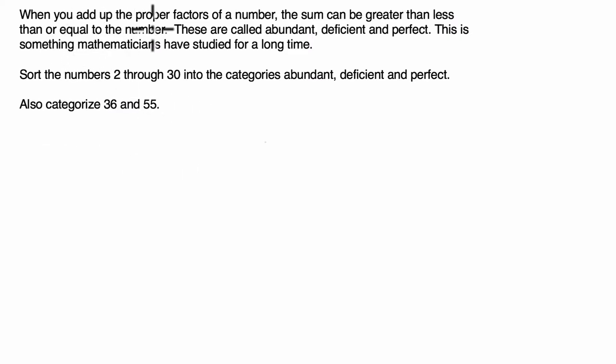All right, so when you add up the proper factors of a number, the sum can be greater than, less than, or equal to the number. And let's just look at that really quick. So let's say we have the number 15. What are the proper factors of 15? Well, the factors of 15 are 1 times 15 and 3 times 5. So the proper factors are all the factors of the number except for the number itself.